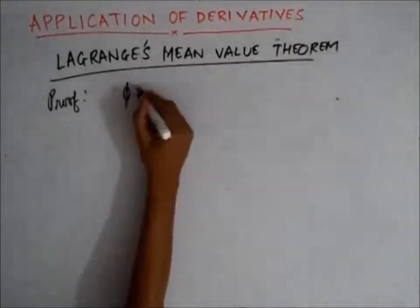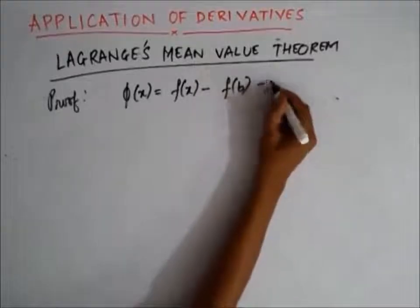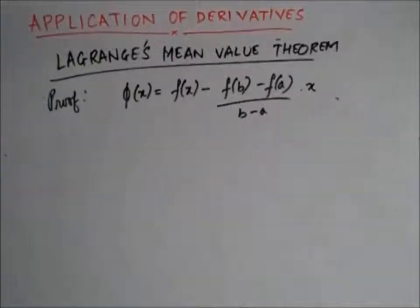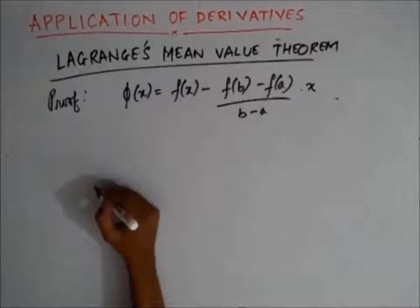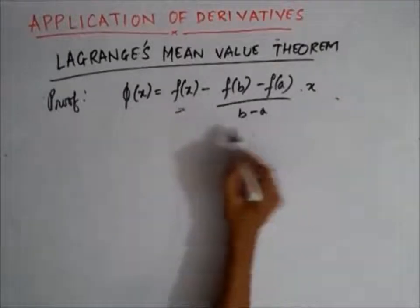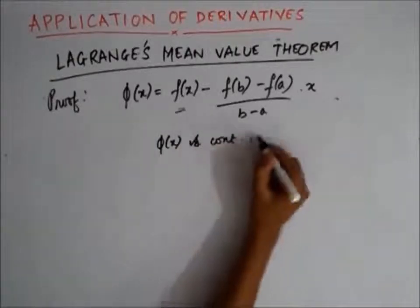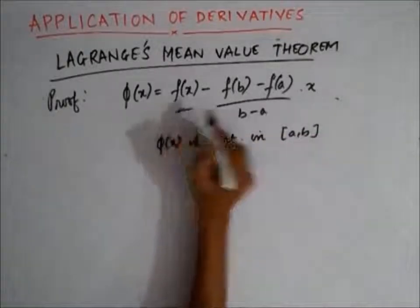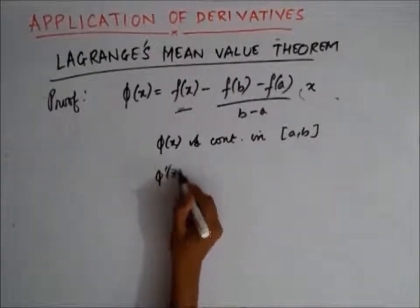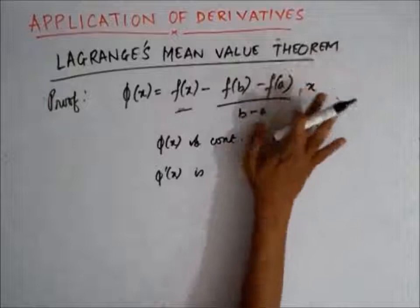What I'll do is, let's assume an auxiliary function φ(x) as f(x) minus [f(b) minus f(a)] divided by (b minus a), times x. Now, since f(x) is continuous in the interval [a, b], φ(x) is also continuous in [a, b]. This is because f(x) is continuous and the second term is a constant multiple of x, which is also continuous. The derivative φ'(x) equals f'(x) minus [f(b) minus f(a)] divided by (b minus a).